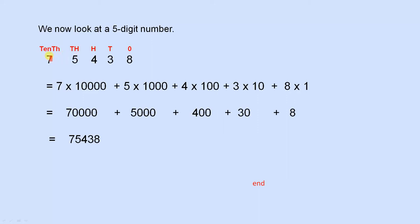So this 7 is actually 7 times 10,000. That 5 is 5 times 1,000. The 4 is 4 times 100. The 3 is 3 times 10, and the 8 is 8 times 1. So we have 70,000, 5,000, 400, 30, and 8. When we add those together we get 75,438.